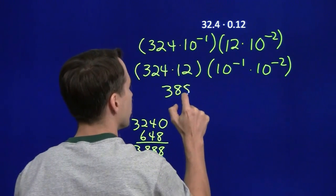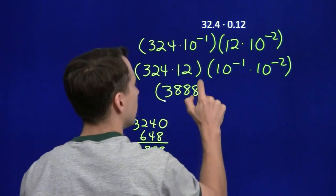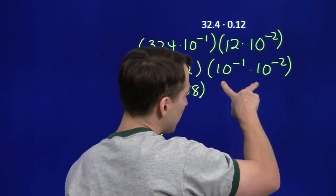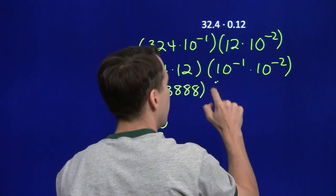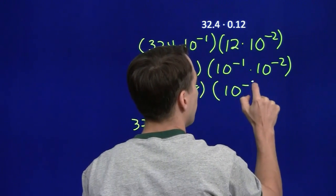So we've taken care of the integers. Now the powers of 10, the bases are the same. We add the exponents, and that gives us 10 to the minus 3.